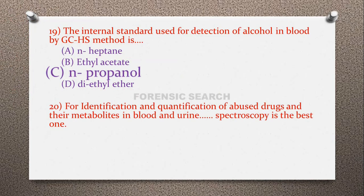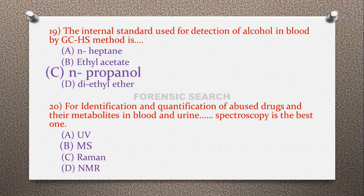Question 20: For identification and quantification of abused drugs and their metabolites in blood and urine, which spectroscopy is the best? Option A: UV spectroscopy, option B: mass spectroscopy, option C: Raman spectroscopy, option D: NMR spectroscopy. The correct answer is option B — mass spectroscopy is the most suitable technique for detection and quantification of abused drugs and their metabolites in blood and urine.